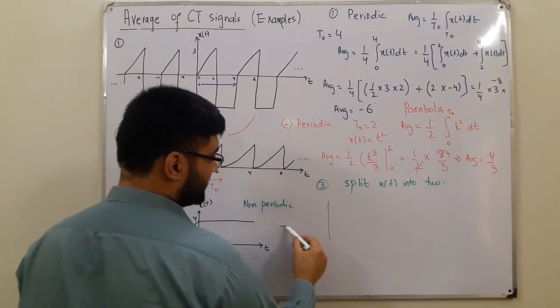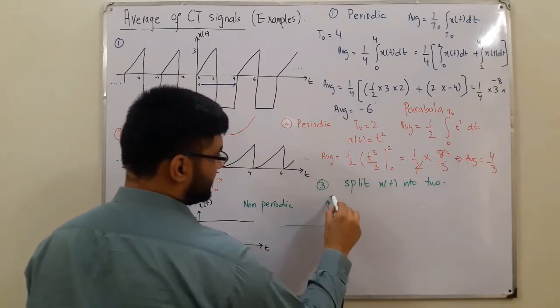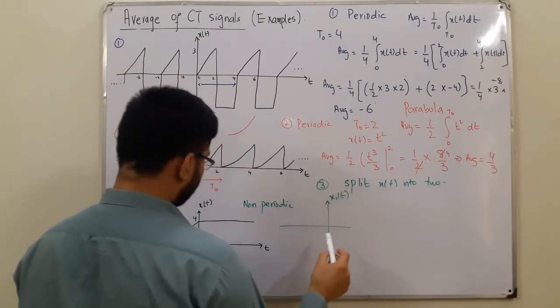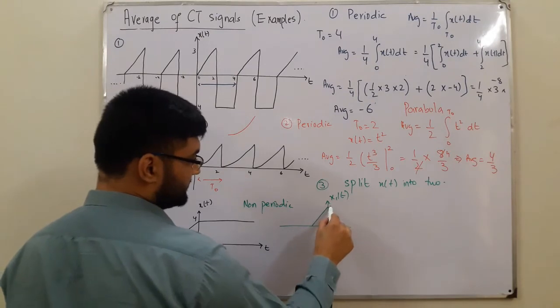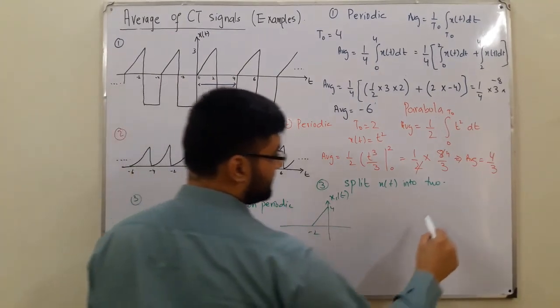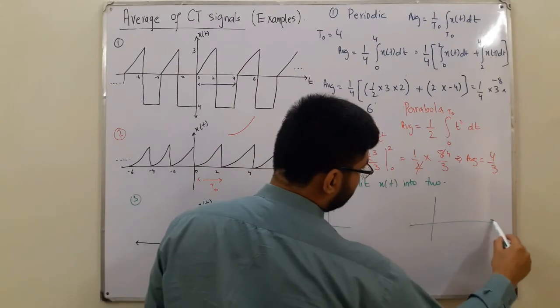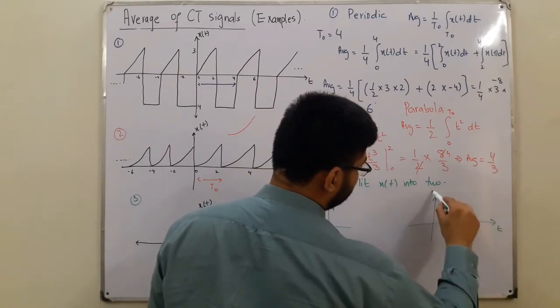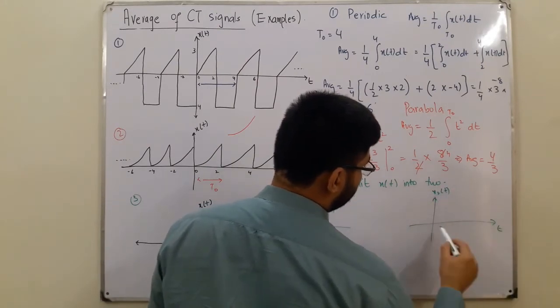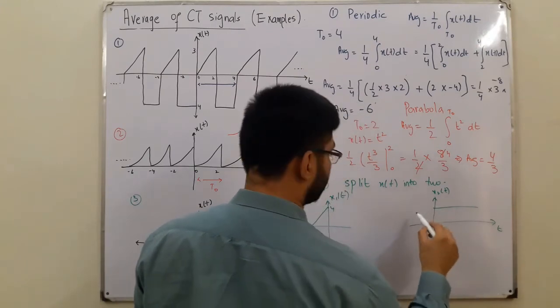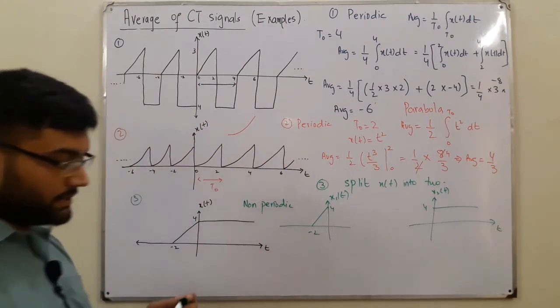Let's say the first represents x1 of t, which is this particular part. This is 4, this is negative 2. And similarly, your x2 of t would be this one, which is 4.